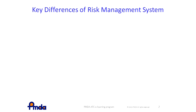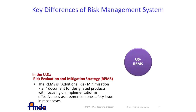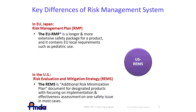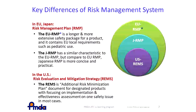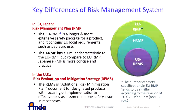These are the key differences of risk management system between the U.S., the EU, and Japan. The U.S. has Risk Evaluation and Mitigation Strategy, or REMS in short. REMS is applied to only selected products decided by U.S. FDA. REMS focuses on additional risk-minimization plan and has no pharmacovigilance plan as post-marketing requirements and no routine risk-minimization measure. The EU and Japan have RMP, which is applied to all new drugs. There are routine and additional activities in RMP. EU-RMP is longer and more extensive and includes EU local requirements such as pediatric use. Compared to EU-RMP, JRMP is more concise and practical. Please note that the number of safety specifications in EU-RMP tends to be smaller according to the revision of EU-GVP Module V.